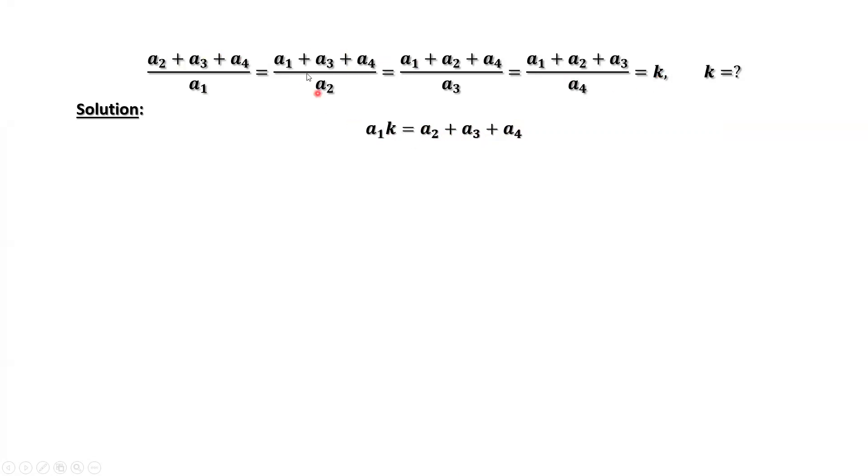We use the second condition. This also equals K. We have A2 times K equals A1 plus A3 plus A4. From the third condition, we have A3 times K equals A1 plus A2 plus A4.